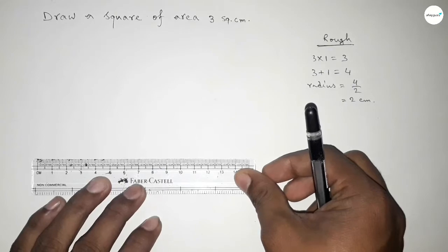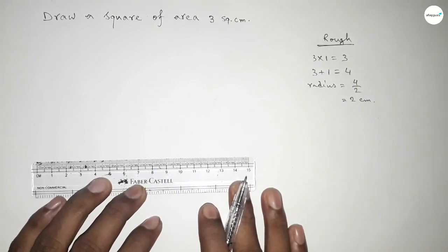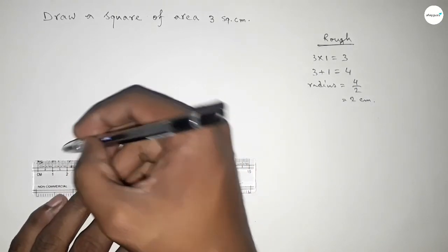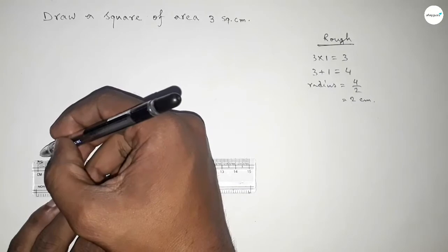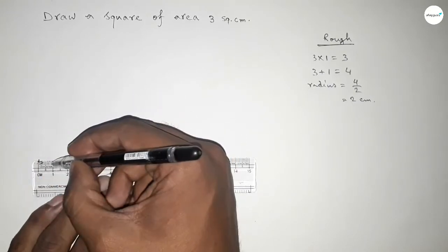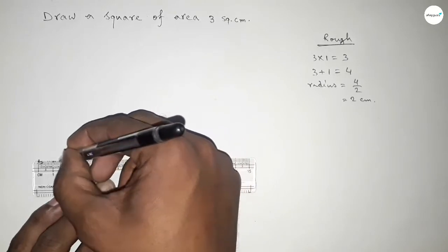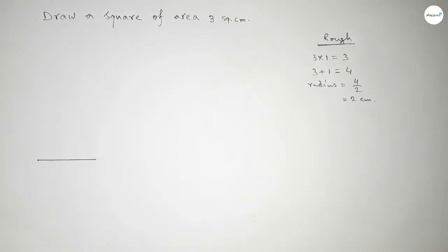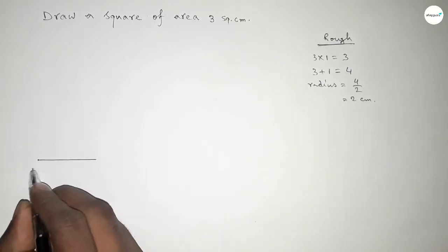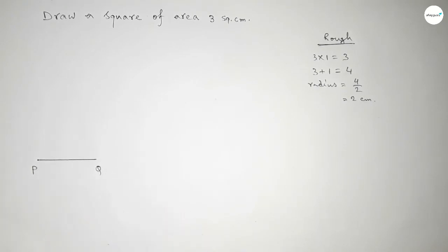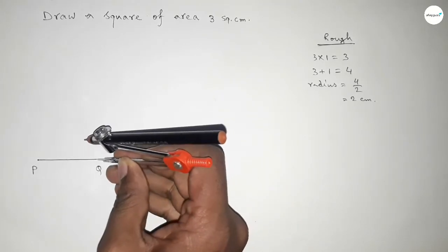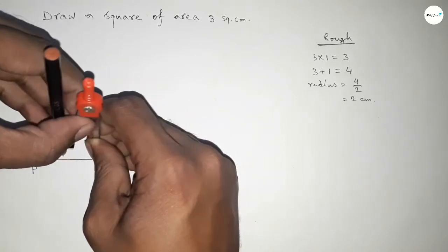First, drawing here a line of 4 centimeters. This is P and Q, so PQ equals 4 centimeters. Now we have to bisect the line PQ, so taking greater than half of PQ and drawing arcs.